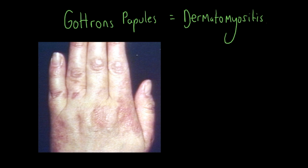Gottron's Papules are usually red or violet in colour and can sometimes be scaly. They're usually found over the metacarpophalangeal joints, or they can also be found over the interphalangeal joints — the proximal and distal interphalangeal joints. However, they can also be found over other bony prominences including the knee, the elbows, or the feet.